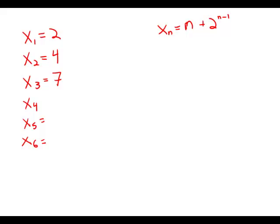What is the difference between the 6th and the 5th terms of the sequence 2, 4, 7 dot dot dot whose nth term is n plus 2 to the n minus 1?